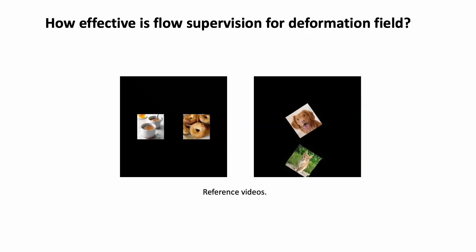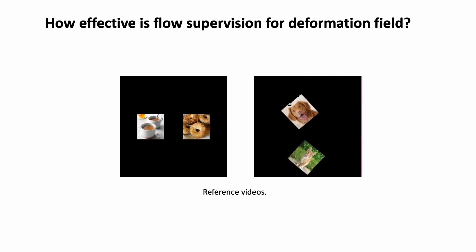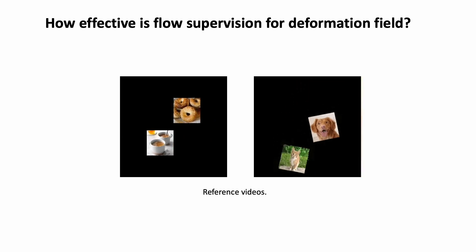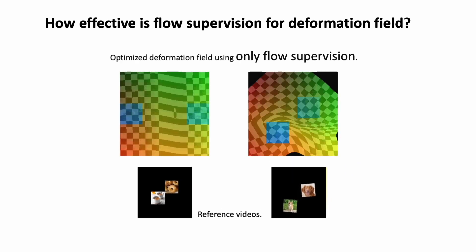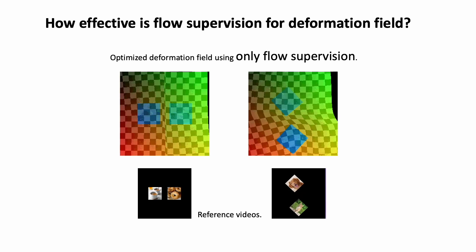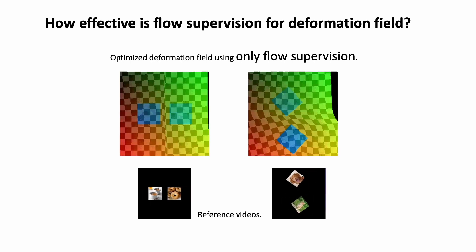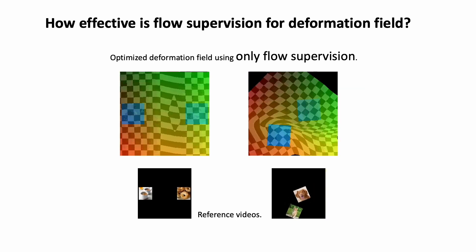To evaluate the effectiveness of our method, we begin with a toy experiment. We created two short videos showing two image patches colliding with each other or having two independent motions. Next, we apply our method to optimize 2D deformation fields using optical flow as the sole supervision. In this visualization, we utilize checkerboard patterns to visualize the optimized deformation relative to the canonical frame. Our method successfully reconstructs the accurate 2D motion for both sequences.